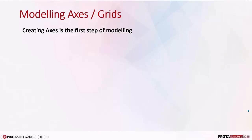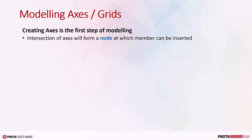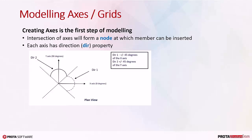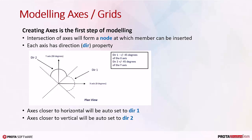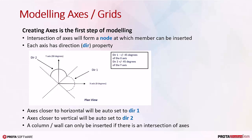Creating axes is the first step of modeling. The intersection of axes will form a node or joint, at which a member can be inserted. Each axis has a direction property. Axes closer to horizontal will be auto-set to direction 1; axes closer to vertical will be auto-set to direction 2. A columnar wall can only be inserted if there is an intersection of axes.